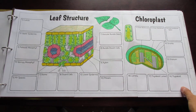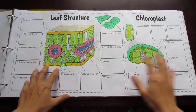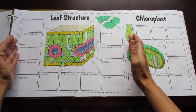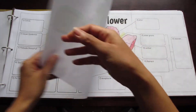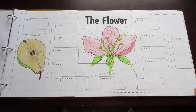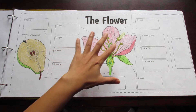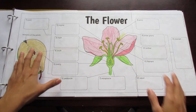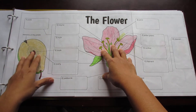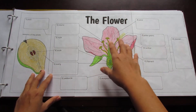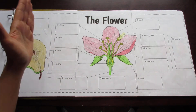Here's leaf structure and chloroplast. This comes as a three-page foldable or just a two-page foldable with just the leaf structure if that's all you want to teach. This is the flower. It comes as a three-page foldable that includes the flower and the pear to show how the structures of the flower become parts of the fruit after the flower has turned into a fruit, or as a two-page foldable with just the flower.